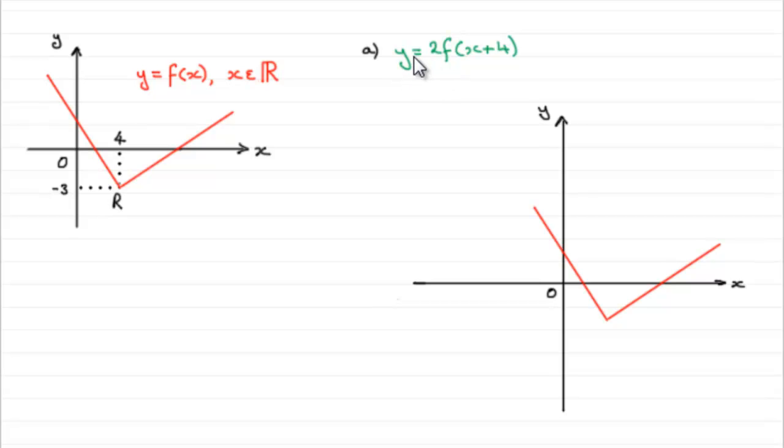What we've got to do is sketch the graph of y equals 2 lots of f of x plus 4. What I've done here is I've copied the graph of y equals f of x and how do we go about sketching this graph?